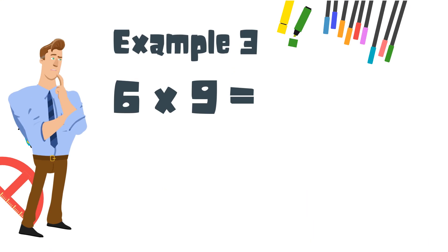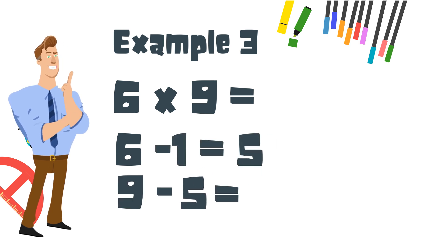Next, 6 times 9. 6 minus 1 equals 5. Excuse me, 9 minus 5 equals 4. So 9 times 6 equals 54.